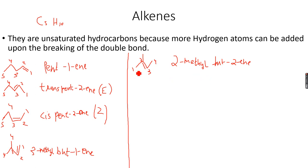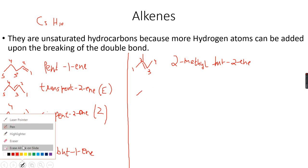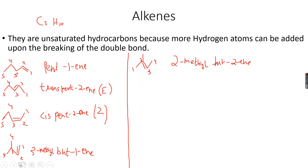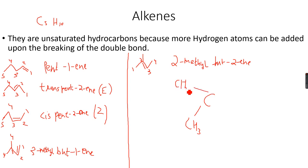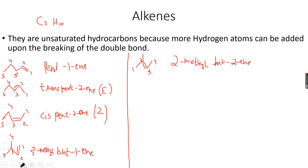So 2-methyl but-2-ene. Can we have any three carbon main chain isomers? No, we cannot. Do we have geometric isomers for this? No, we do not, because the second carbon atom is attached to a CH3 from the first carbon atom and also to the CH3 of the methyl group. Since this carbon atom is attached to two identical groups, it will not show cis-trans isomerism. So there will be in total five alkene isomers with C5H10.